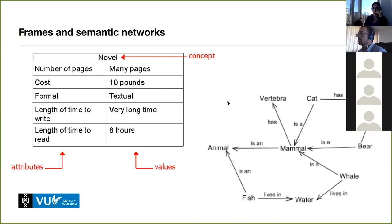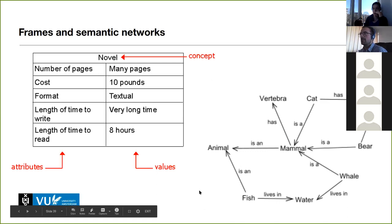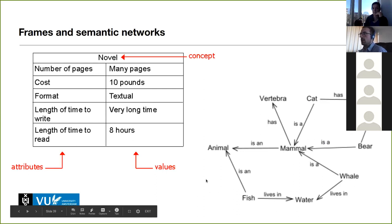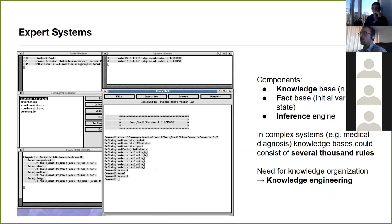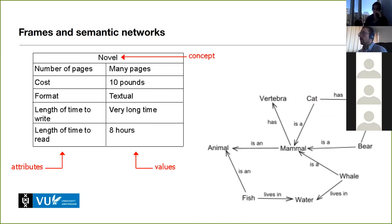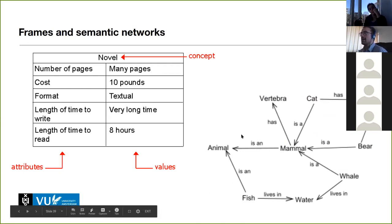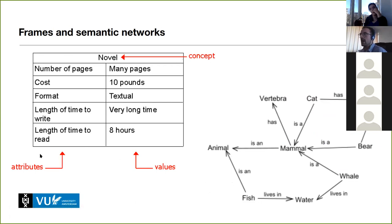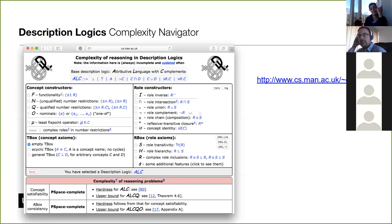In the 80s and 90s, we had a huge leap into frames and semantic networks. The idea was not so much finding the right logic to encode everything, but to actually model the world — writing things down in so-called semantic networks. Things like 'mammal has vertebra,' 'mammal is an animal,' 'fish is an animal,' and for each concept, frames describing basic attributes and their values. Much of what we'll see in this course is inherited from that tradition.